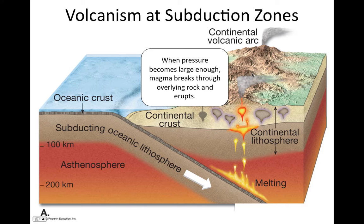So, if you plan to travel the world to look for the oldest fossils on Earth, which of the choices below can you eliminate first and not bother visiting? A, Canada. B, Antarctica. C, the South Pacific. D, Australia. E, Michigan.